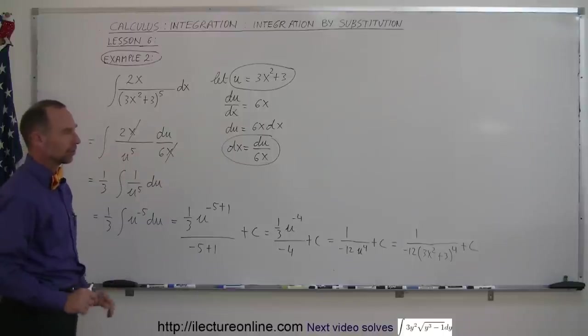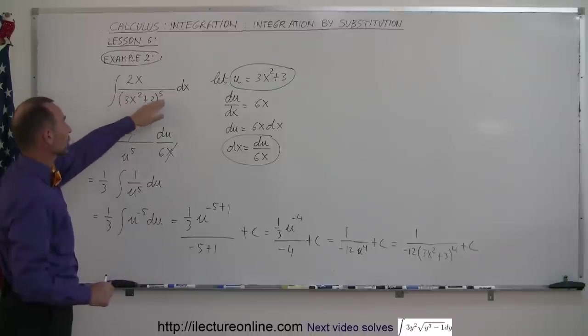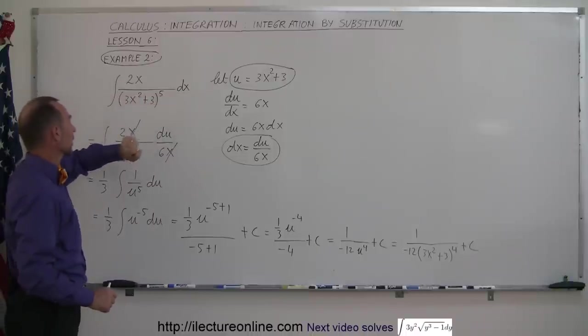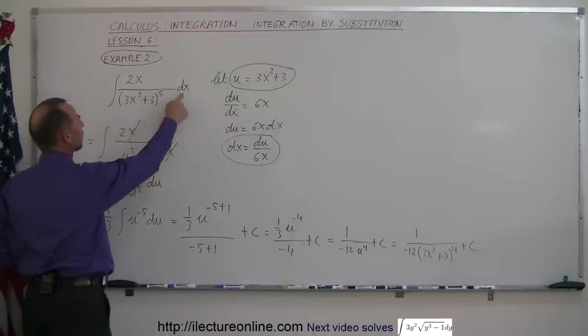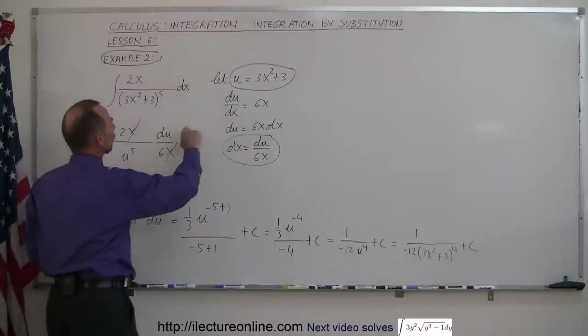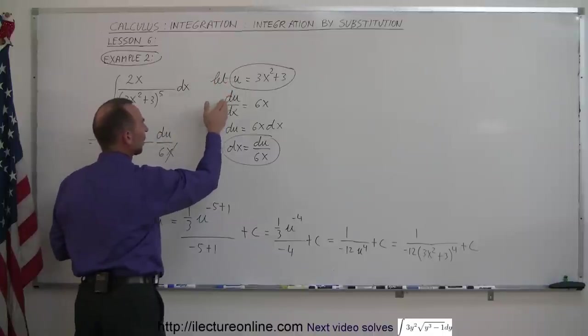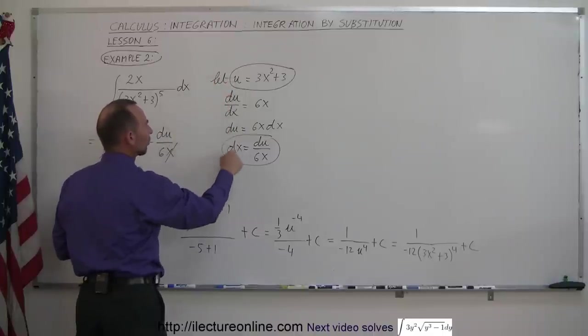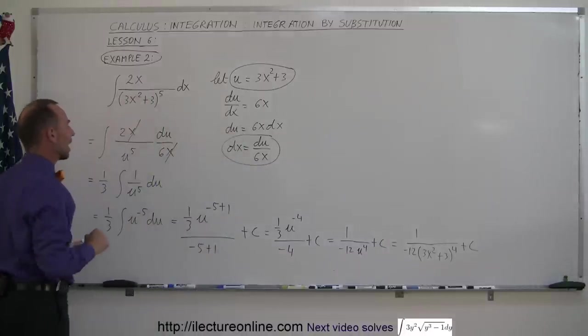So that looks a little complicated, but again, the steps are: you see an integral there, you don't know how to integrate this because you don't have a proper differential. You need a 6x dx here in order to integrate that. Since you don't have that, you use the method of substitution. You let u be what's inside the parentheses, take the derivative with respect to x, solve for du, then solve for dx, and substitute back into the integral.